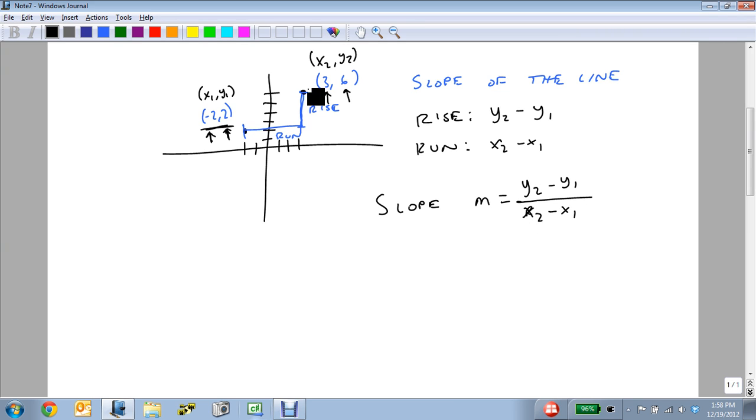So for this particular value, we get 6 minus 2 divided by, since I used the 6 first, I've got to use its matching x value of 3, minus a negative 2. And so this gives 6 minus 2 is 4. 3 minus a minus 2 is 5. And that's my slope.